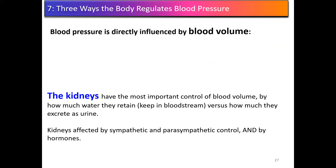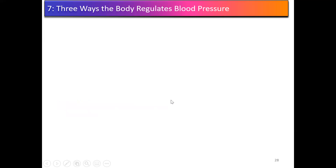Blood pressure is influenced by blood volume, and the best thing that controls blood volume is your kidneys — they're the number one regulator. There are three ways the body regulates blood volume and blood pressure, and a few of them involve what the kidneys do. The nursing program wants you to know this, and there have been NCLEX questions on these topics.